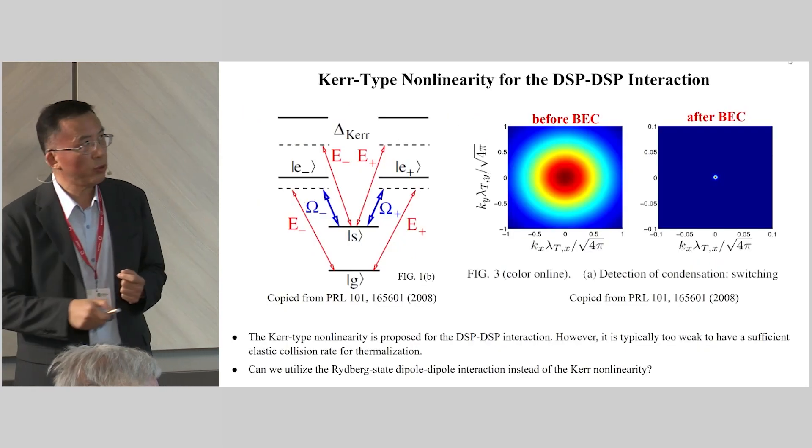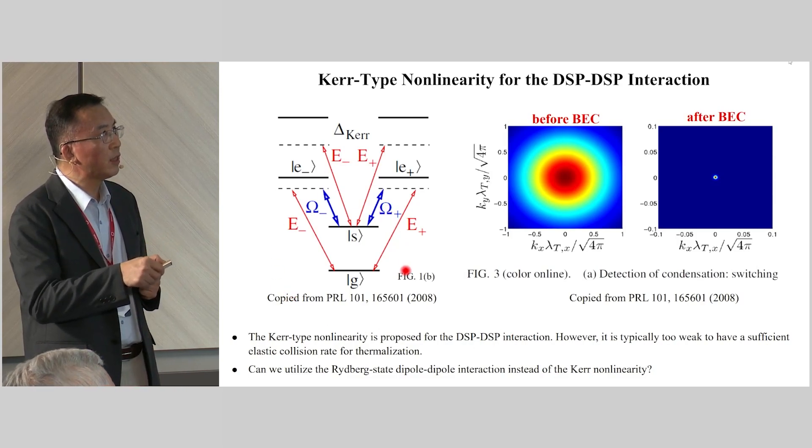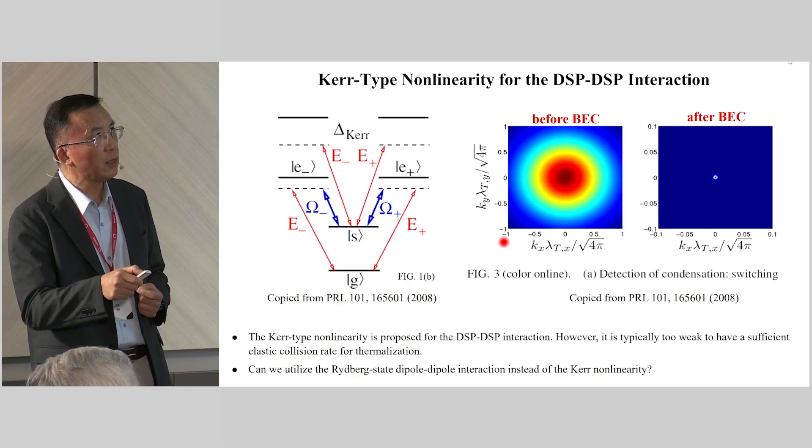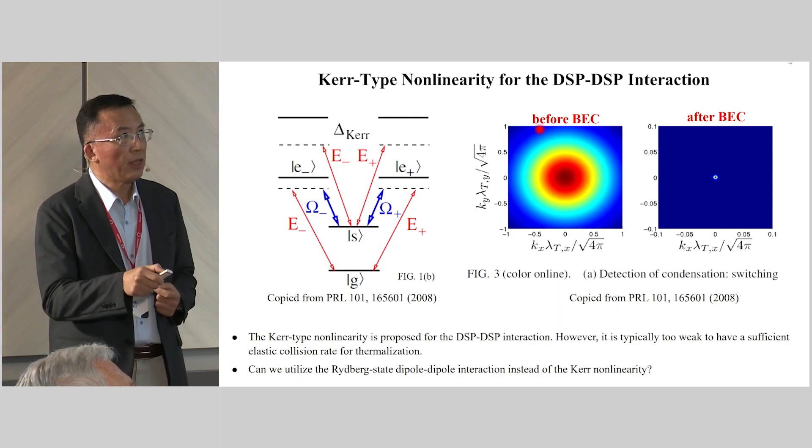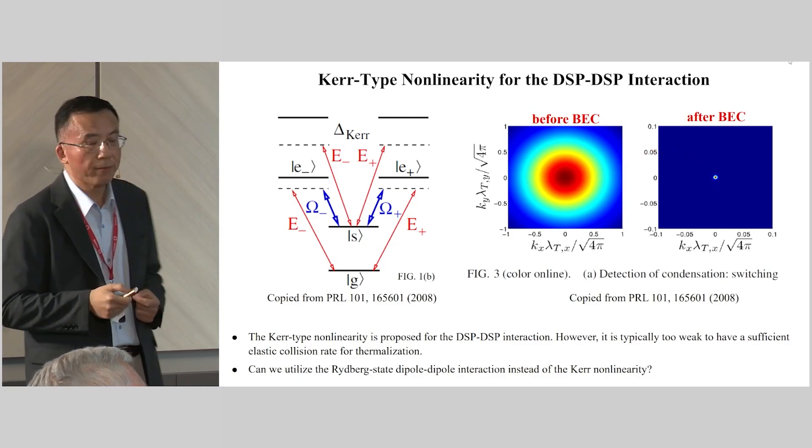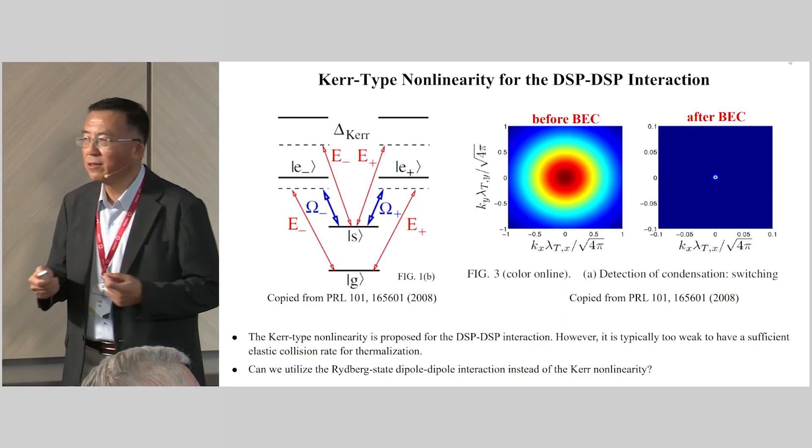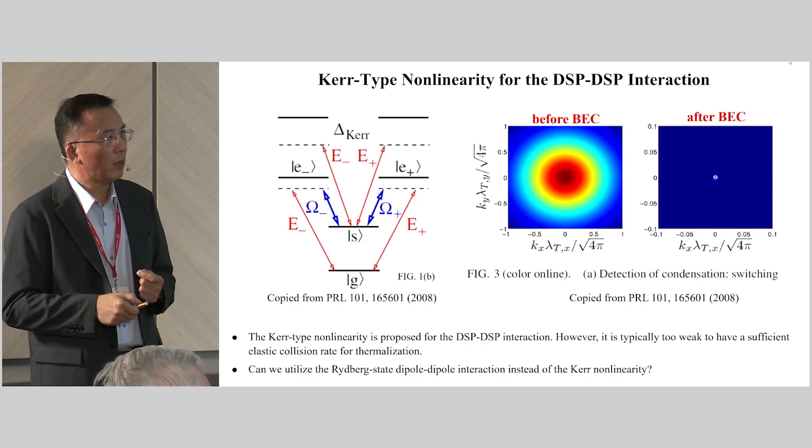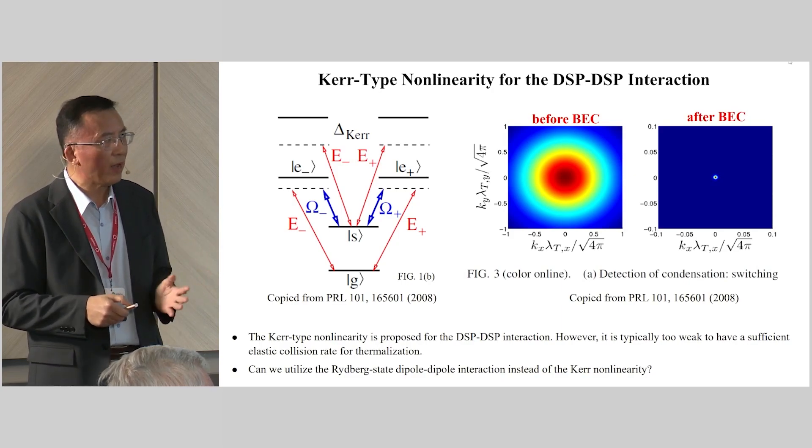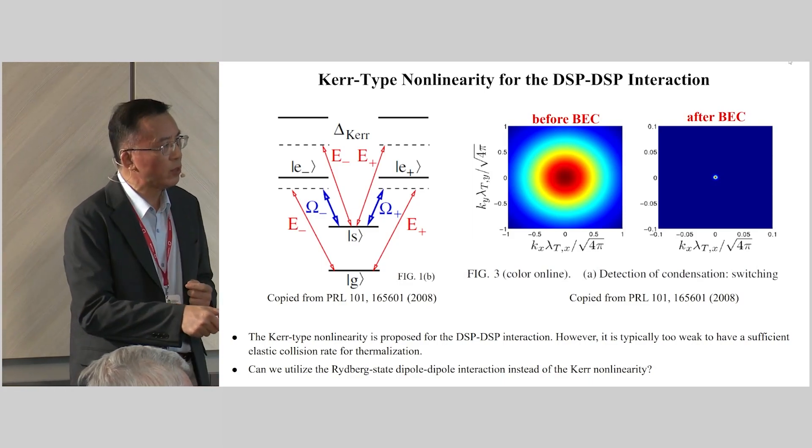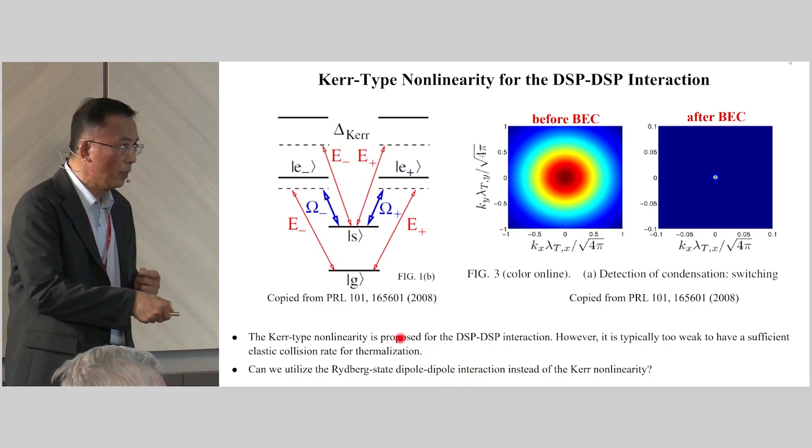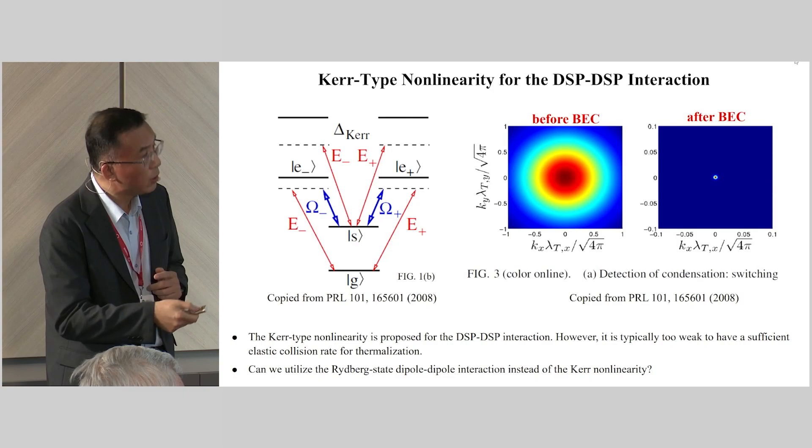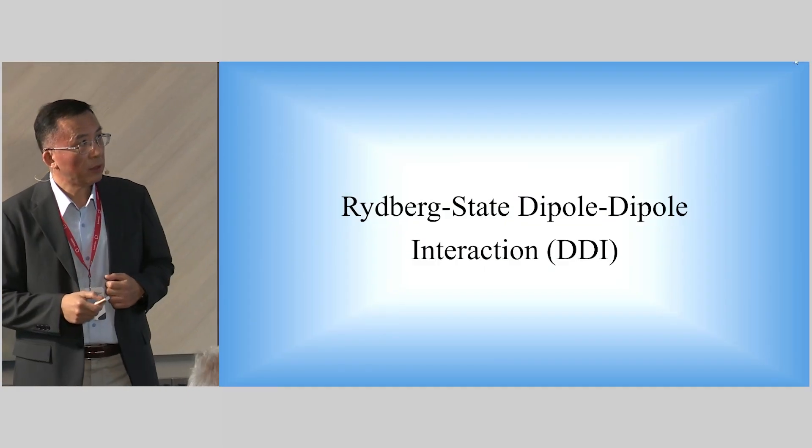It was proposed to utilize the Kerr-type nonlinear interaction for thermalization. These two figures show the momentum distribution of stationary dark-state polariton before and after the BEC. After the BEC, all the polaritons go to the lowest momentum state. At that time, we estimated whether we can achieve BEC or not with the stationary DSP. However, typically Kerr-type nonlinearity is very weak, so we just forgot about it for a while. Then later, we started our Rydberg experiment, and we considered whether we can use the Rydberg state dipole-dipole interaction instead of nonlinear Kerr-type interaction to mediate the thermalization.